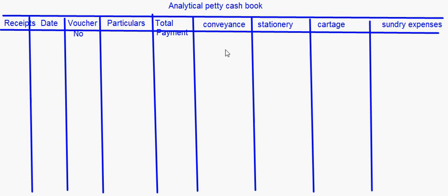The main difference to remember between the simple petty cash book and the analytical petty cash book is that the analysis columns are present in the analytical petty cash book for separate items, whereas they are not there in the simple petty cash book. In a simple petty cash book you can't easily identify expenses for particular items like conveyance or stationery, but in the analytical petty cash book we can easily find out how much has been spent on each head.